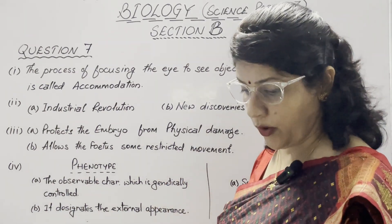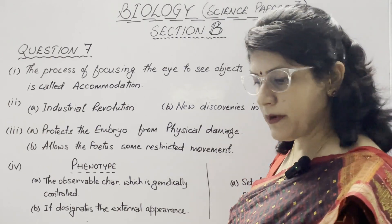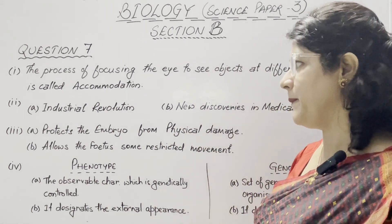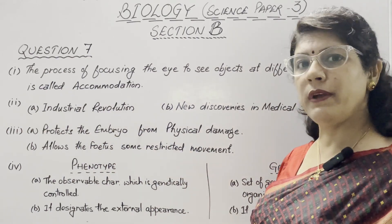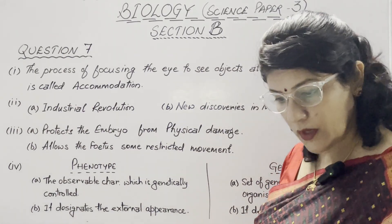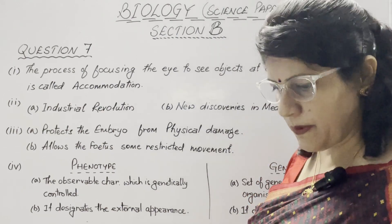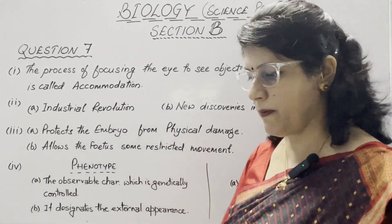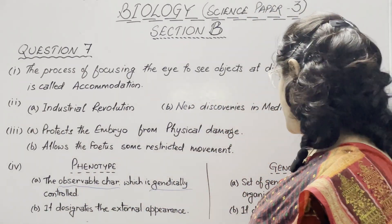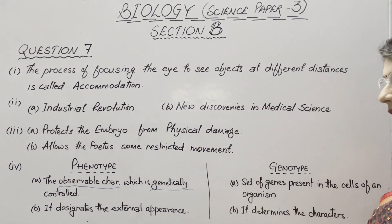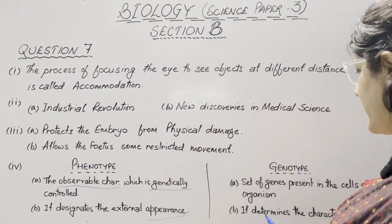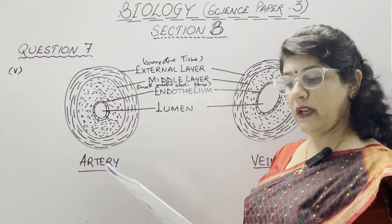In the third part, mention two functions of amniotic fluid. First, it protects the embryo from physical damage such as jerks or accidents. Second, it allows the fetus some restricted movement and prevents the fetus from sticking to the amnion. In the fourth part, what is the difference between phenotype and genotype? Phenotype is the observable characteristic, which is genetically controlled — it designates the external appearance of the body. Genotype is the set of genes present in the cells of an organism, which determines the characters of the body.